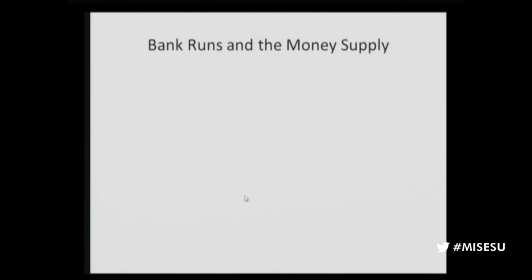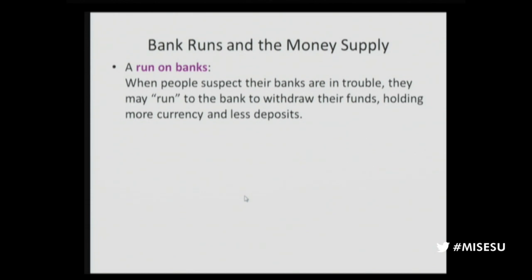Now let's talk about bank runs and the money supply. A run on banks is when people suspect their banks are in trouble and run to withdraw their funds, holding more currency and less deposits. For every dollar you take out in currency, the bank has no backing for $10 of checking account money — they have to shrink checking account money by 10 times the dollar you take out. If we all run on banks, they can only pay 10% of their deposit liabilities. The rest just disappears into thin air.